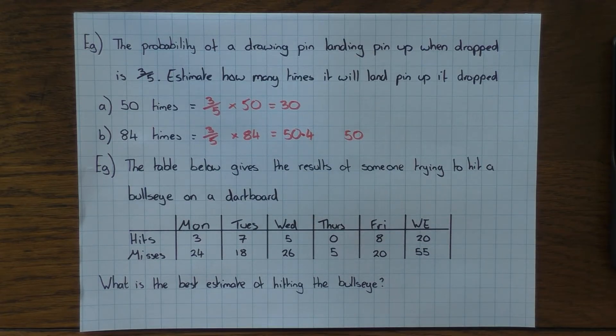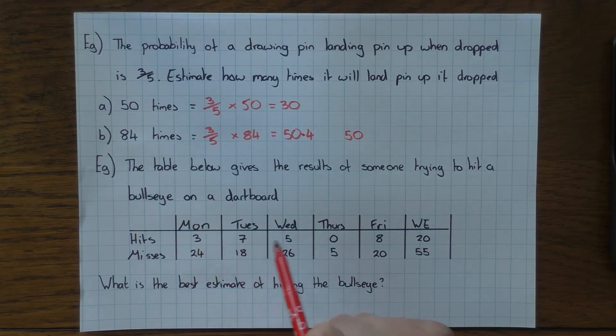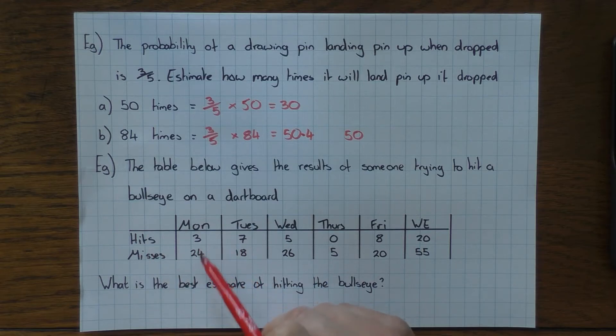And last one we're going to have a look at here. The table below gives the results of someone trying to hit a bullseye on a dartboard. So we have different days: Monday, Tuesday, Wednesday, Thursday, Friday, and the weekend. We have the hits and the misses for each day. So 3 and 24, 7, 18, and so on. And we're asked what is the best estimate of hitting the bullseye.